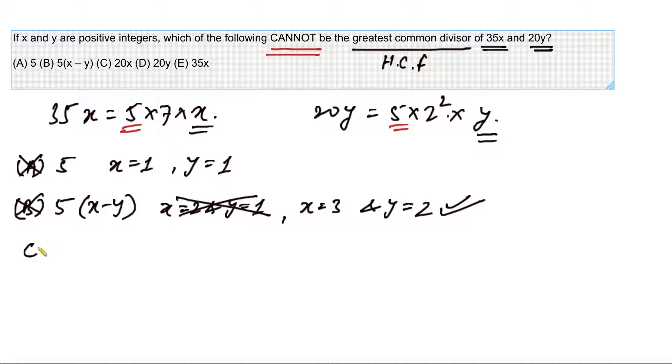Now we go to option C. Option C says 20x. We should understand what highest common factor means. Highest common factor is the biggest common divisor, a number which can divide each of these numbers without leaving any remainder.